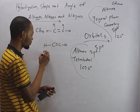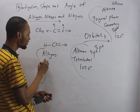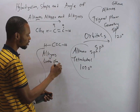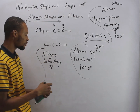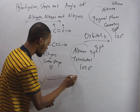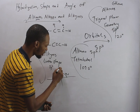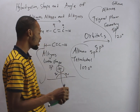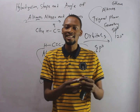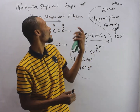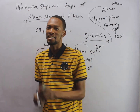Alkynes have linear shape and are SP hybridized. For anything that is linear, the angle between them is 180 degrees — the angle on a straight line is 180 degrees. So the bond angle for alkynes is 180 degrees. That is hybridization, shape and angle of alkanes, alkenes and alkynes.